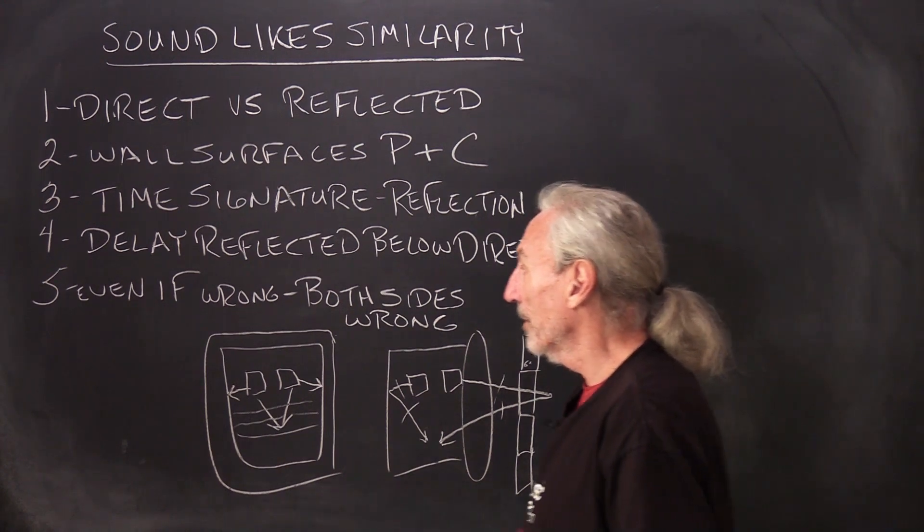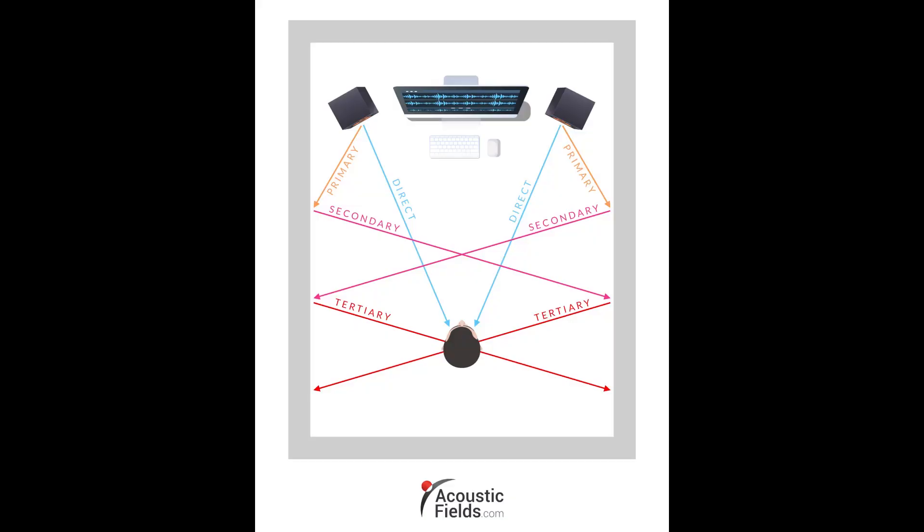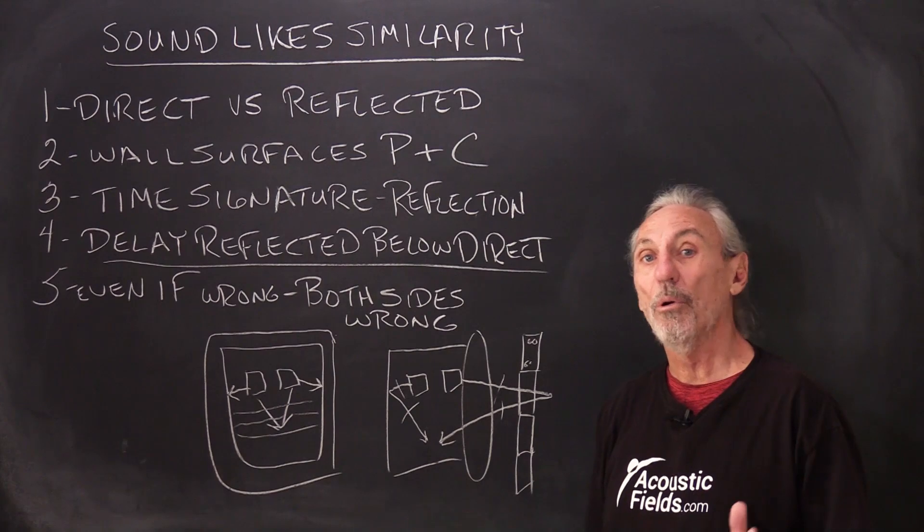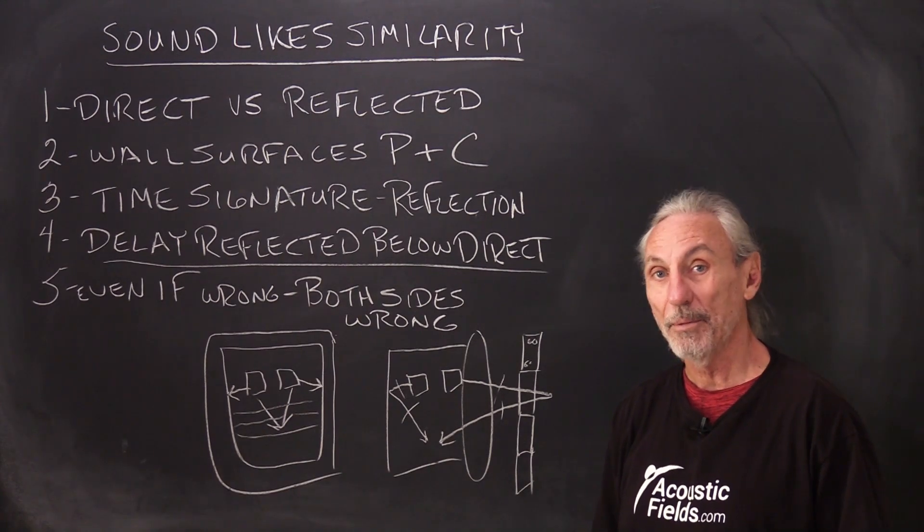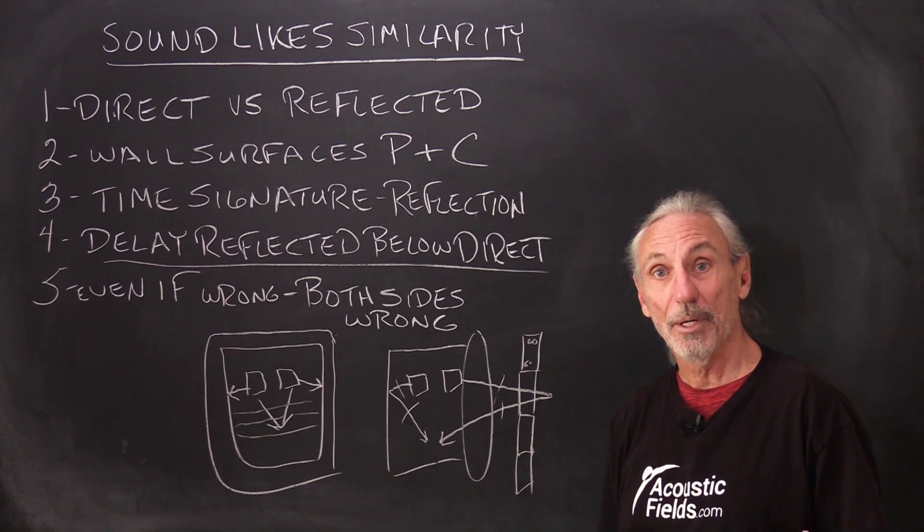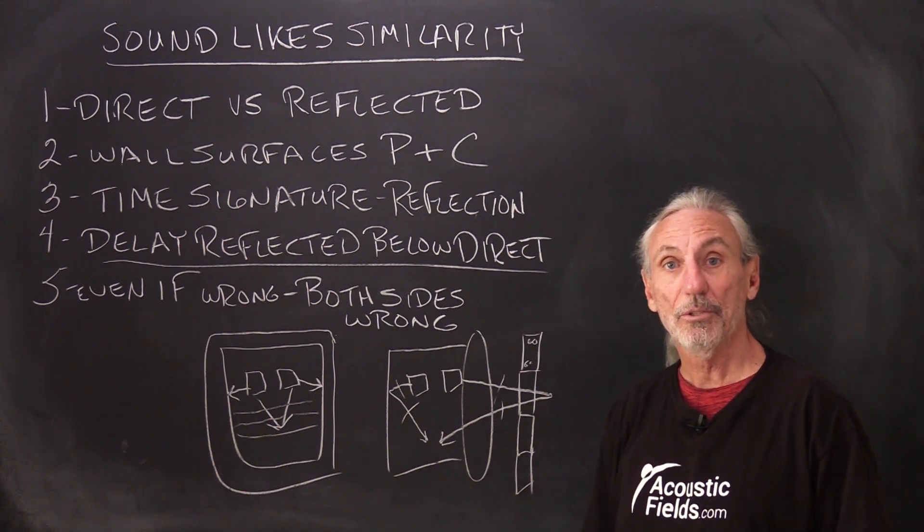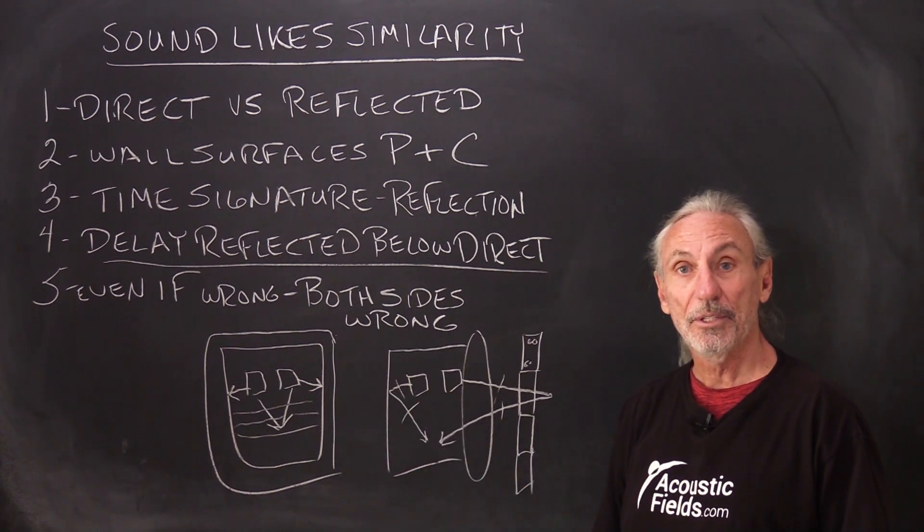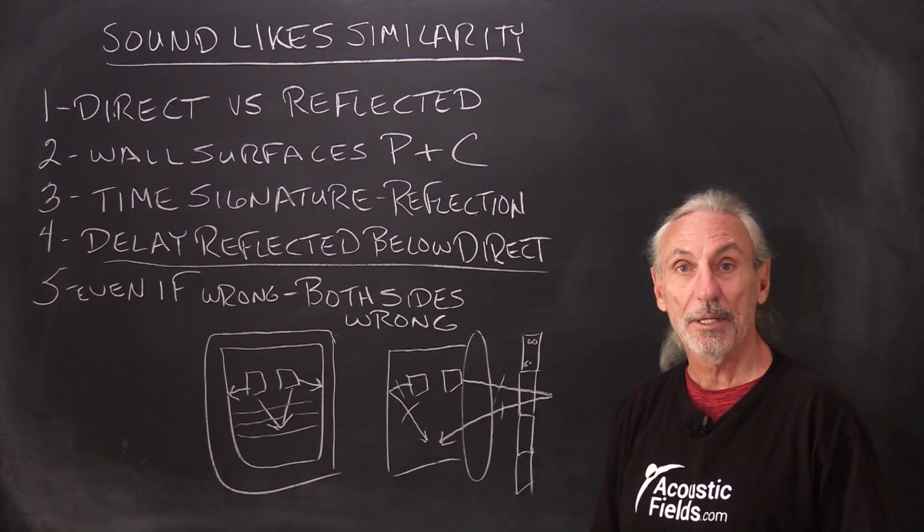Our goal obviously is to delay the reflected below the direct. Now how far below? Well, there's a whole range of time signatures. It can be 10 milliseconds, 15 milliseconds, or 20 milliseconds. It just depends on your usage. It also depends on the distance. It depends on your speakers.